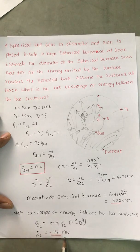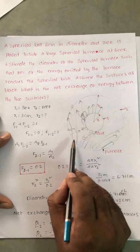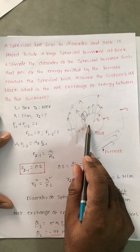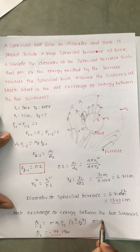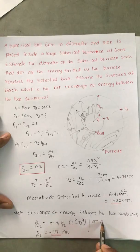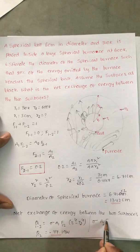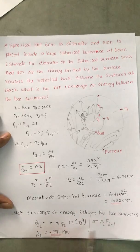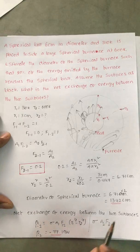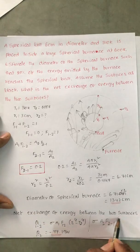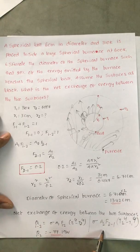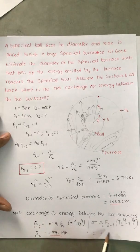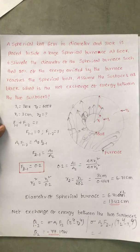The negative sign means heat is transferred from the furnace to the ball. You can also calculate it as Q21 = σ · A2 · F21 · (T2⁴ − T1⁴), and you will get the same answer with a positive sign. Thank you very much.